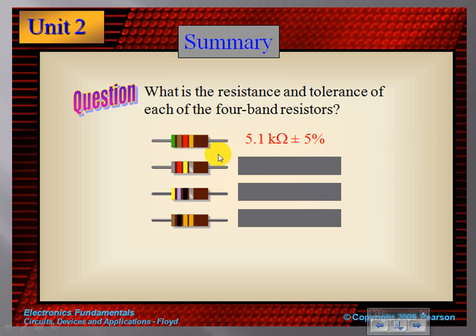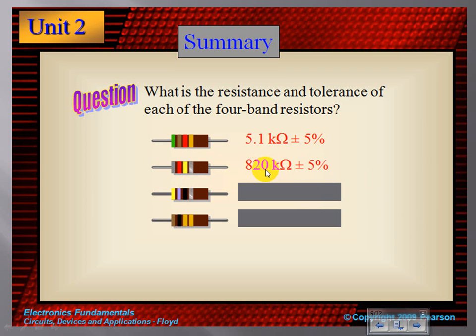Let's try another: gray, red, yellow. Gray is 8, red is 2, and my multiplier is yellow, which represents 10 to the 4th, so I add four zeros to 82 giving 820,000. My tolerance is plus or minus 10%. Notice this is written as 820 kilo-ohms rather than 820,000, because we divide by 1,000 to get kilo-ohms.